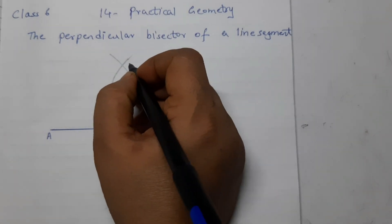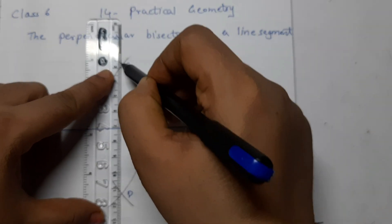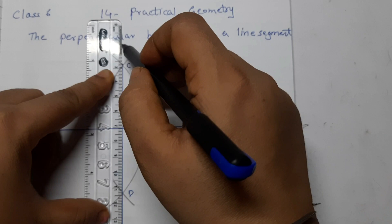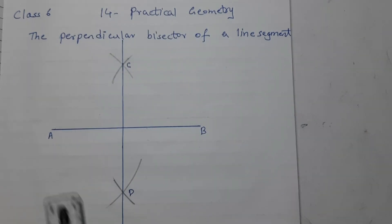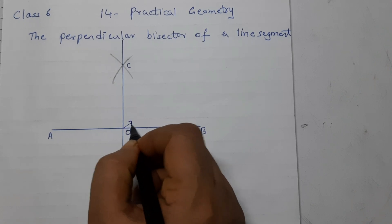Label it as C and D. Let this point be O, that is the midpoint.